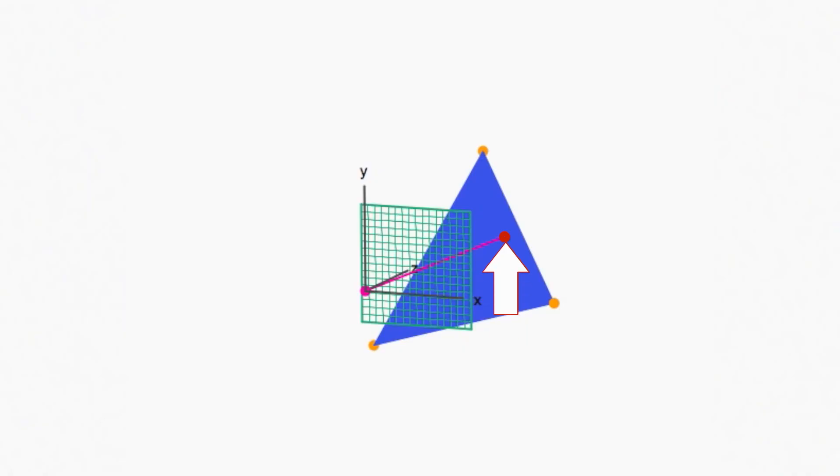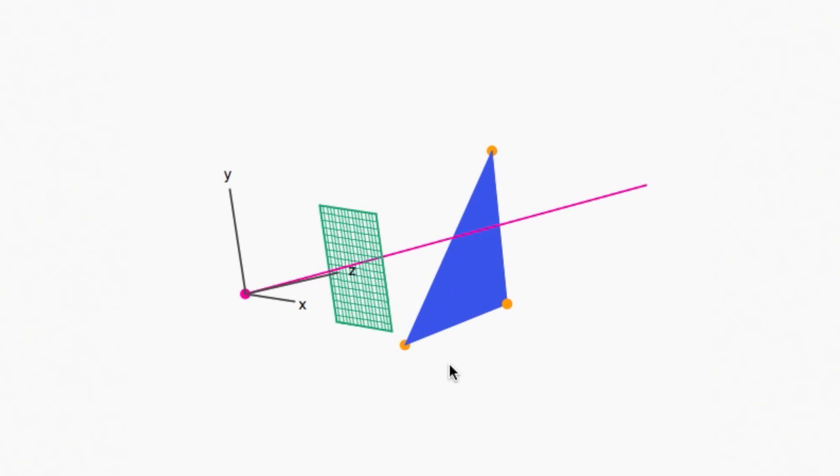In the previous video, we saw how to compute an intersection point i that lies in the plane of a triangle. But how can we tell if the point is like this one that's inside the triangle, or like this one that's outside the triangle?